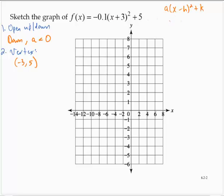Notice that x + 3 is the same as x minus negative 3. So we can think of it as (x - (-3))² + 5. And so then negative 3 is the x-coordinate of the vertex.